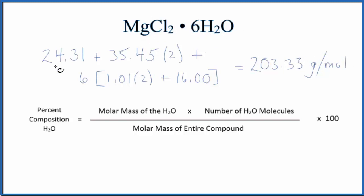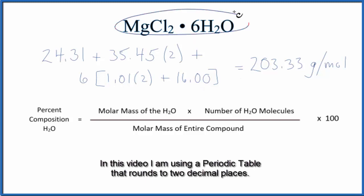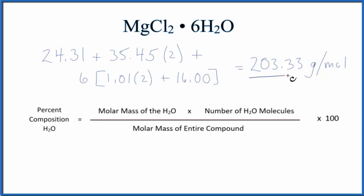I've calculated the molar mass here for the entire compound, the MgCl2·6H2O. We end up with 203.33 grams per mole. So that's for the whole compound here.